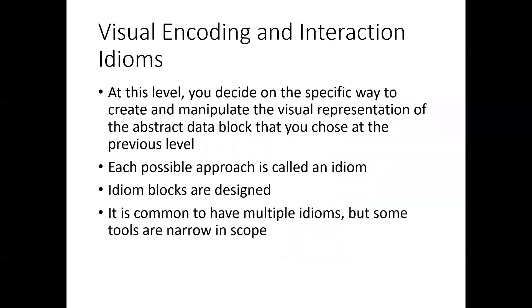Next level is the visual encoding and interaction idioms. And in this level, you decide on a specific way to create and manipulate the visual representation of the abstract data block that you choose in the previous level. Each possible approach is called an idiom, and idioms are really important in the book. There are different approaches to producing a visualization. And we design idiom blocks. It's common to have multiple ones that are working at the same time, but some tools are narrow in scope.